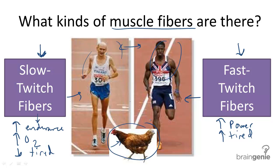A person's genes actually determine the proportion or the percentage of each type of muscle fiber in your body. Generally we have the same number of each, as mentioned before, but some people can have more of one type than another.